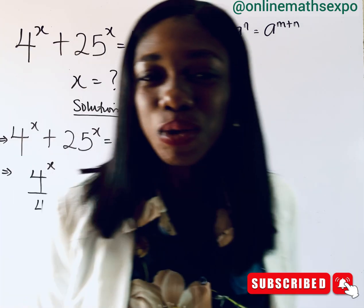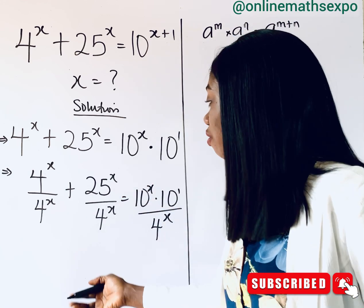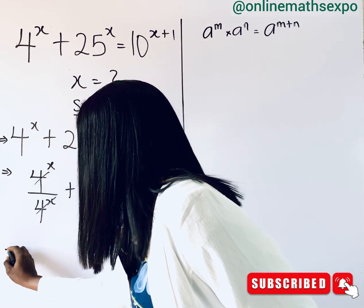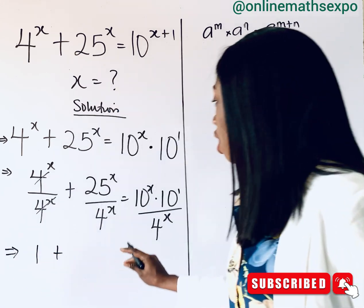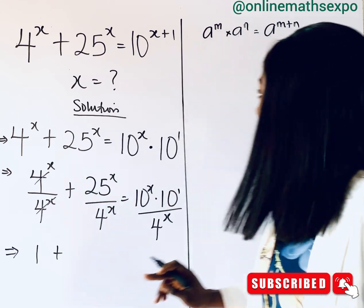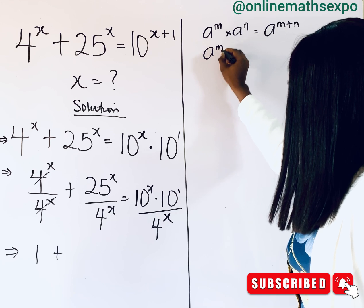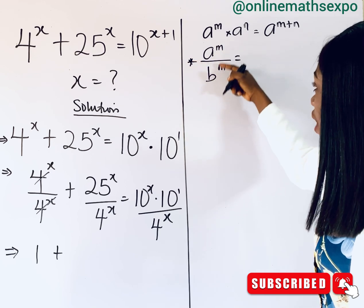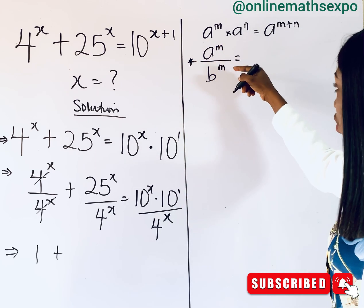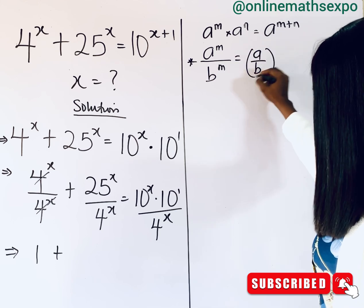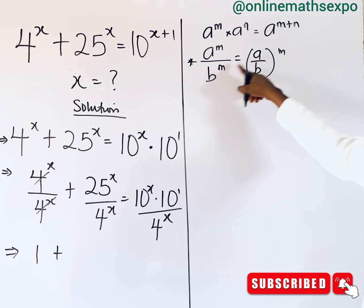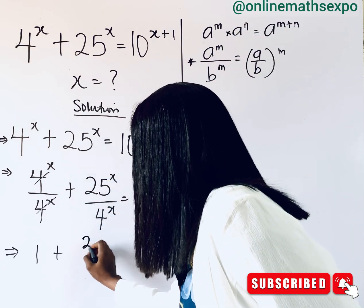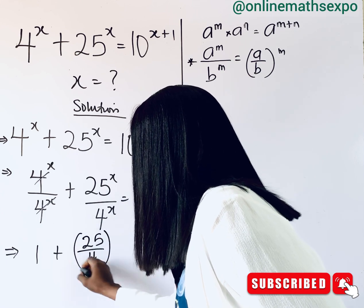Now, when you divide a number by itself it is 1, so the first fraction gives us 1. So we are having 1 plus something. Now, remember that if you have a to the power of m over b to the power of m — the two are raised to the same power — it is a over b raised to that same power. So we can apply it here, and we are going to have 25 all over 4, raised to the power of x.